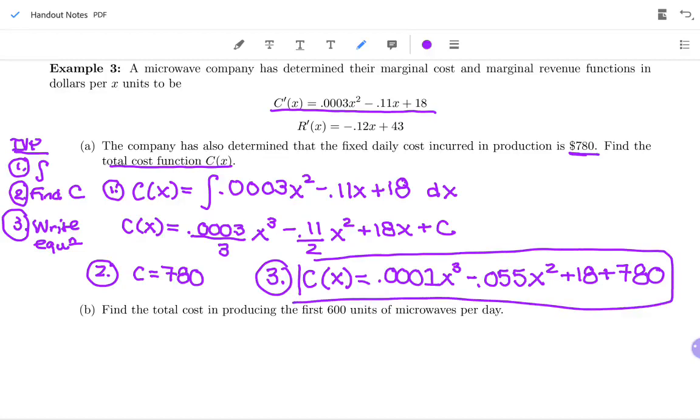Okay, so then part B, we have the total cost in producing the first 600 units of microwaves per day. That's what we want to find. So if I want to find the total cost, do I want to plug into C prime or to C? Well, we said the derivative of cost is also called marginal cost, and it's not saying find the marginal cost for 600, so that's kind of a hint right there. And we know that when we do an antiderivative, we find total or net change. If it asks for instantaneous change or change at one instant, it would be the derivative. But if you're trying to find the total or net change, that's the antiderivative. So we're going to plug into the equation we just found.